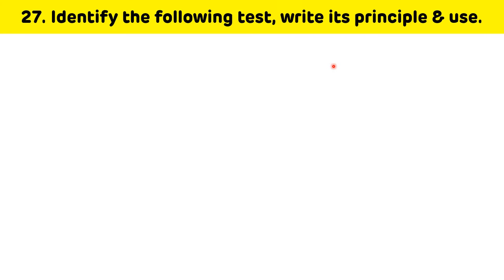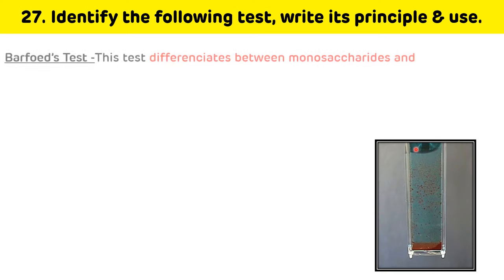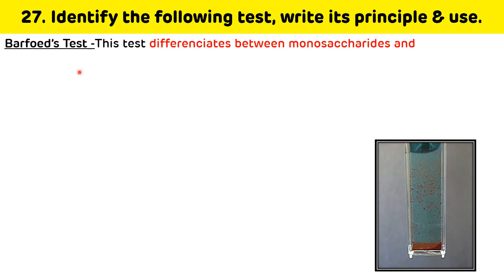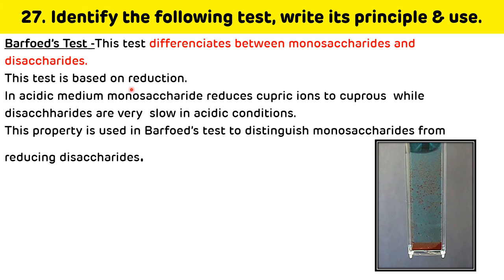Identify the following test and write its principle and use. This is Barfoed's test, which is done to differentiate between monosaccharides and disaccharides. The test is based on reduction: in acidic medium, monosaccharides reduce cupric ions to cuprous ions, while disaccharides are very slow in acidic conditions. This property is used in Barfoed's test to distinguish monosaccharides from reducing disaccharides.